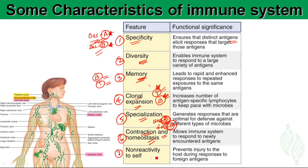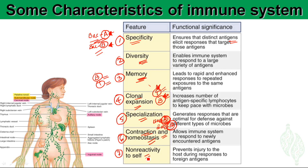The seventh property is non-reactivity to self. When the immune reaction is high against a foreign pathogen, it only reacts to the foreign pathogen and not to the body's own cells. If it reacted to self cells, those cells could be destroyed. That's why the immune response is normally non-self-reactive, but when this principle breaks down, it can produce autoimmune diseases.